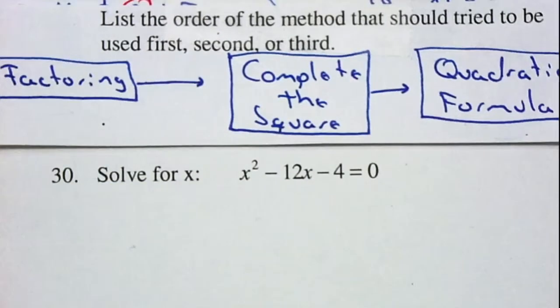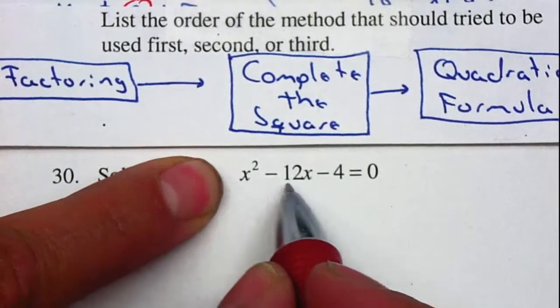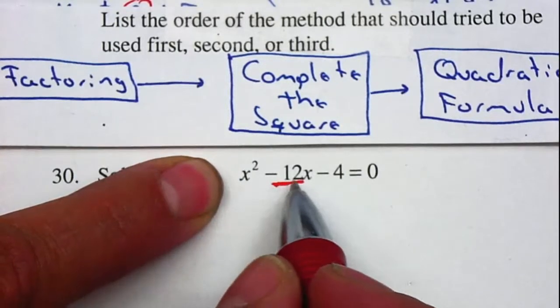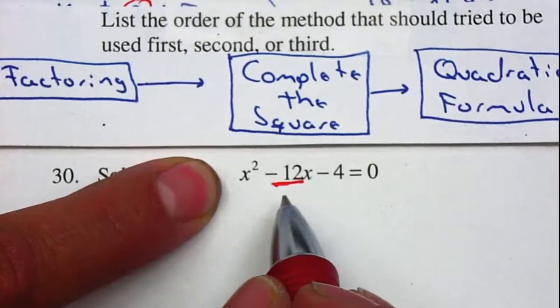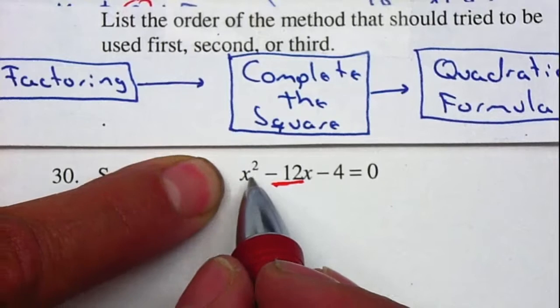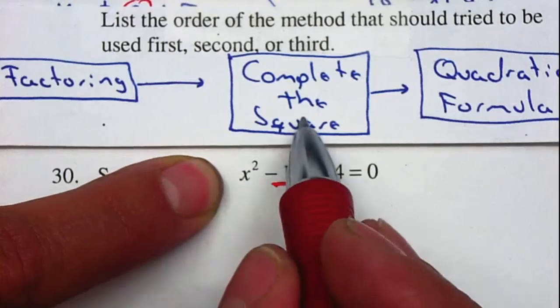Now to complete the square, you need to have an x² with a coefficient of 1, which we do, and your value of b should be even. If it's odd, we're still able to do it but it gets more challenging with fractions. If you have a leading coefficient, it gets a lot more challenging. So in this case, we are going to complete the square.